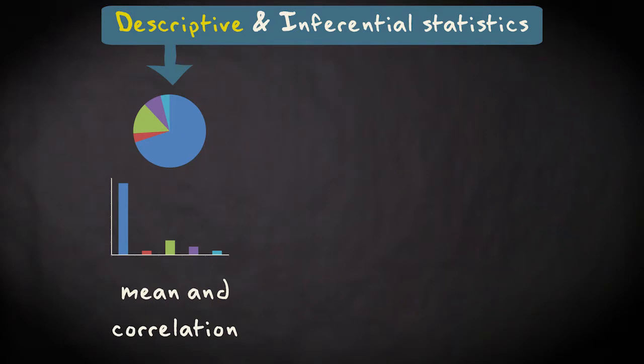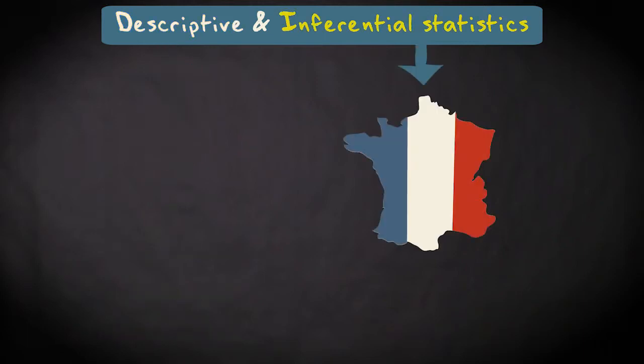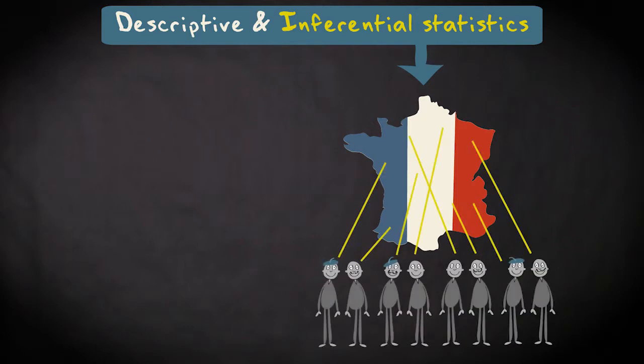Inferential statistics is about drawing conclusions about a population on the basis of only a limited number of cases. An example is saying something about all citizens of France on the basis of a sample of relatively few French citizens.